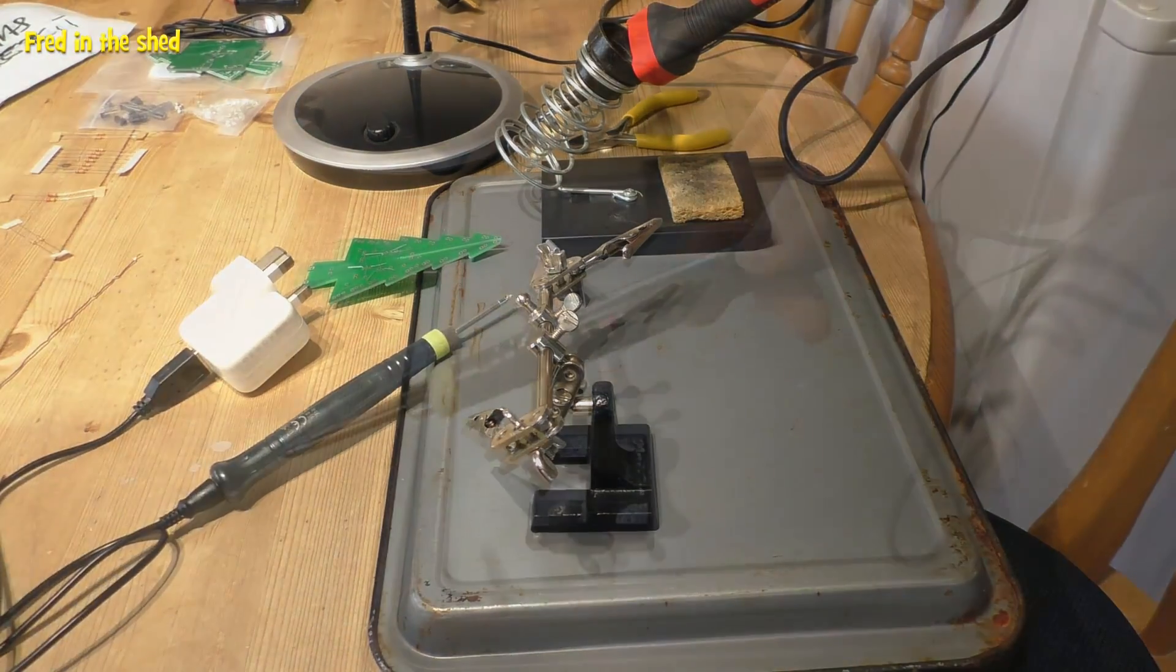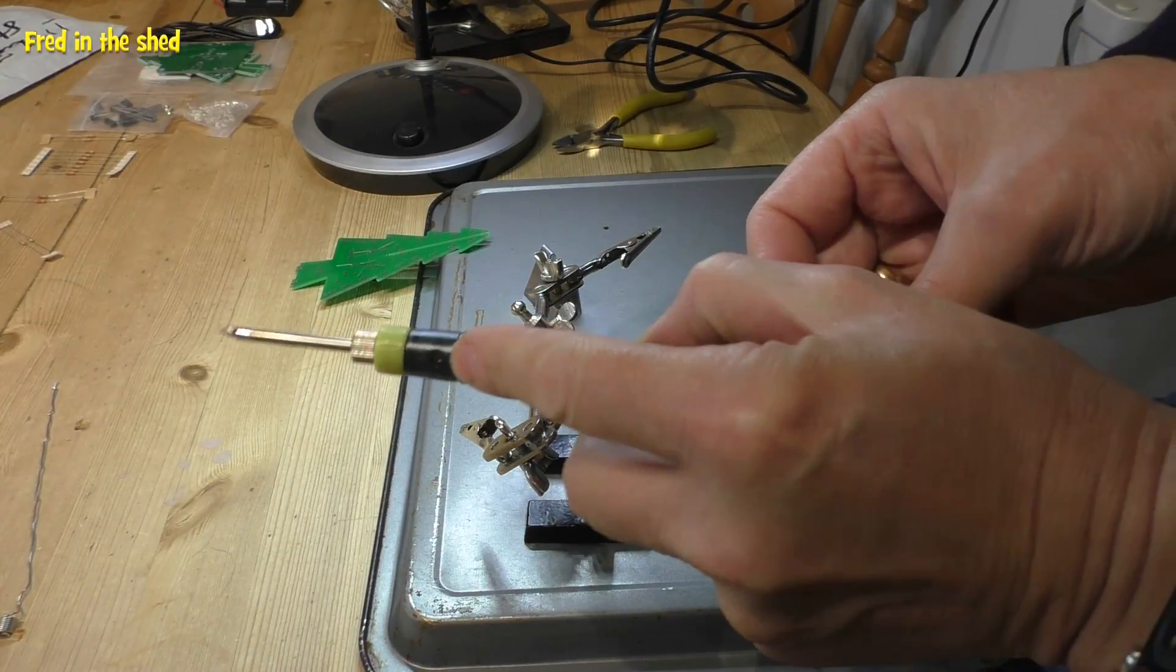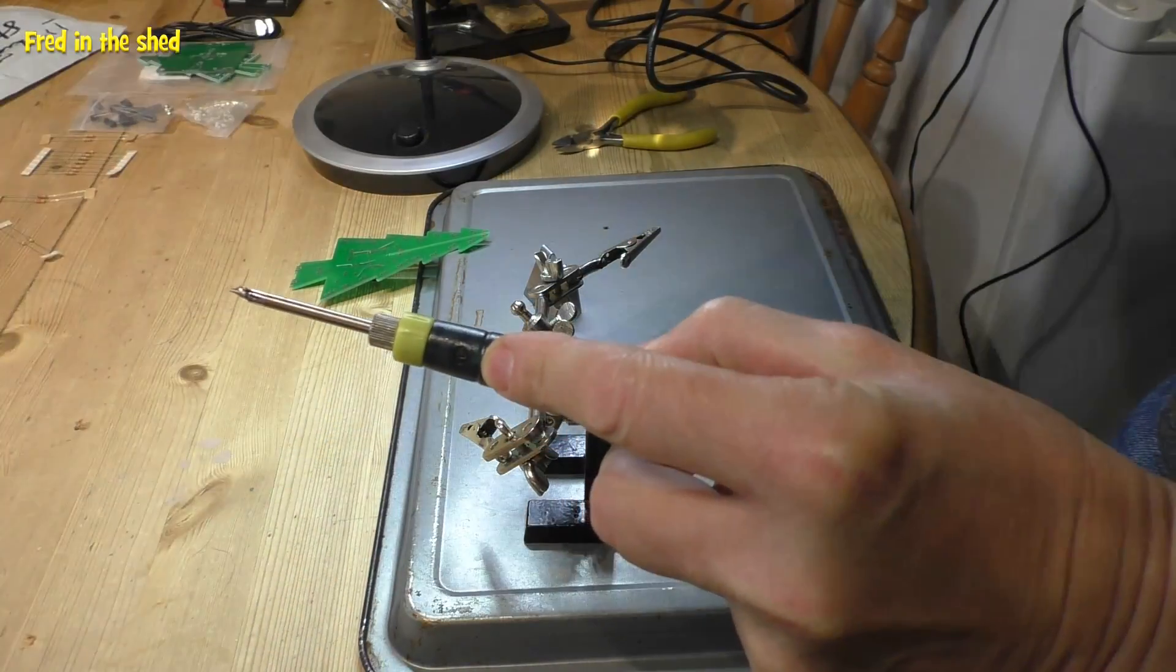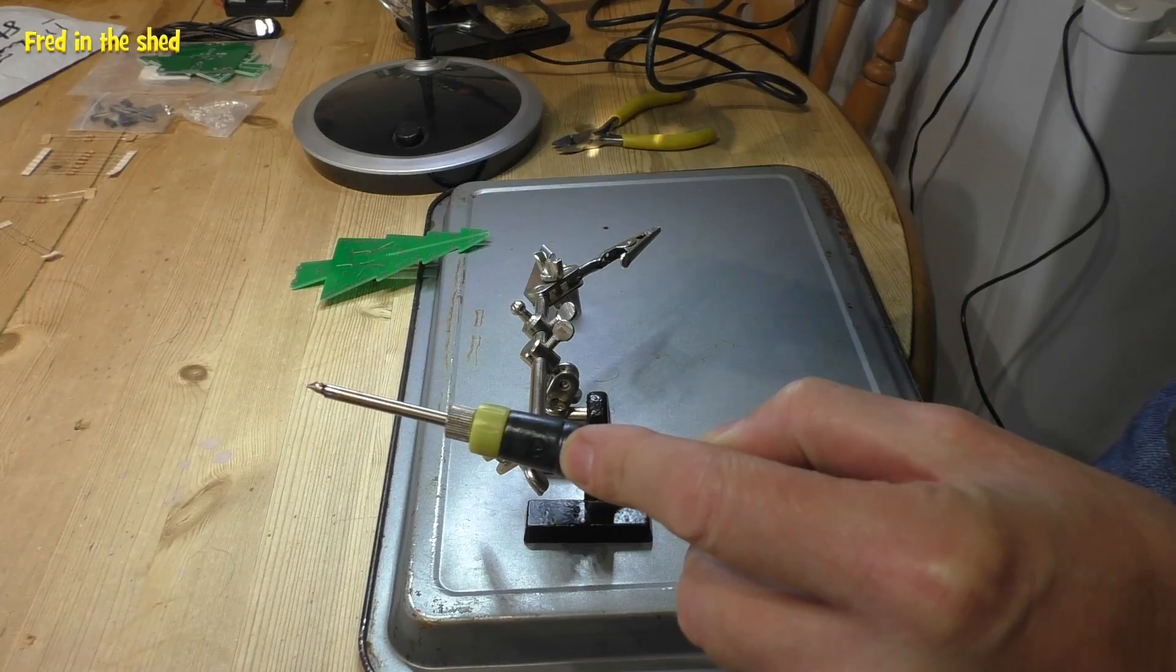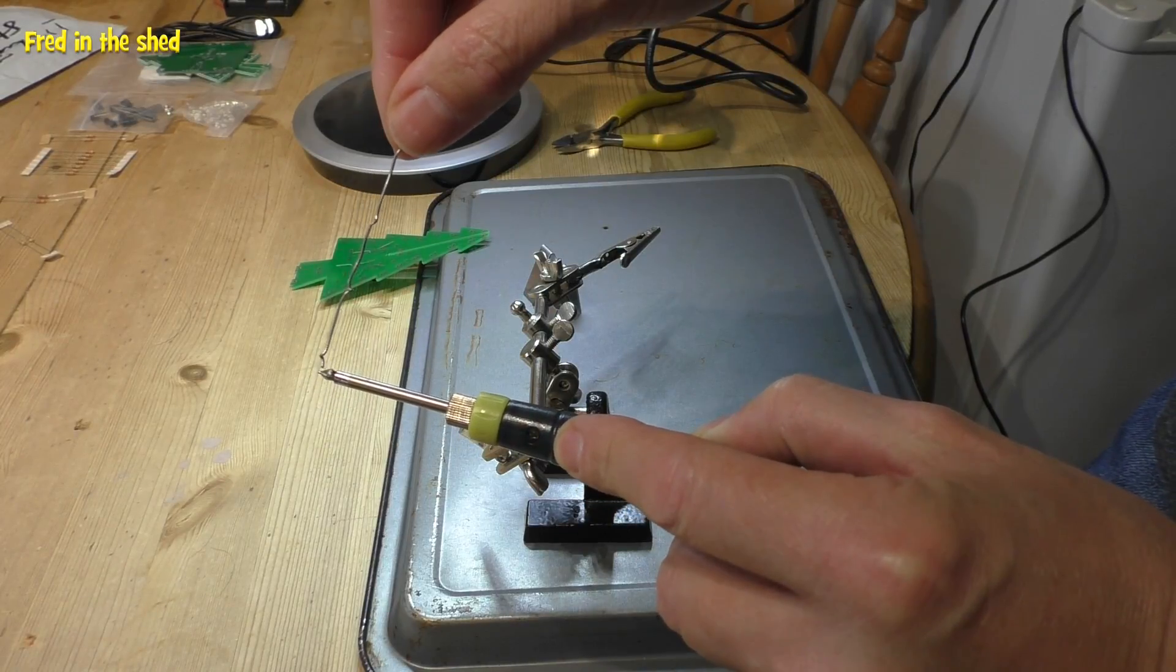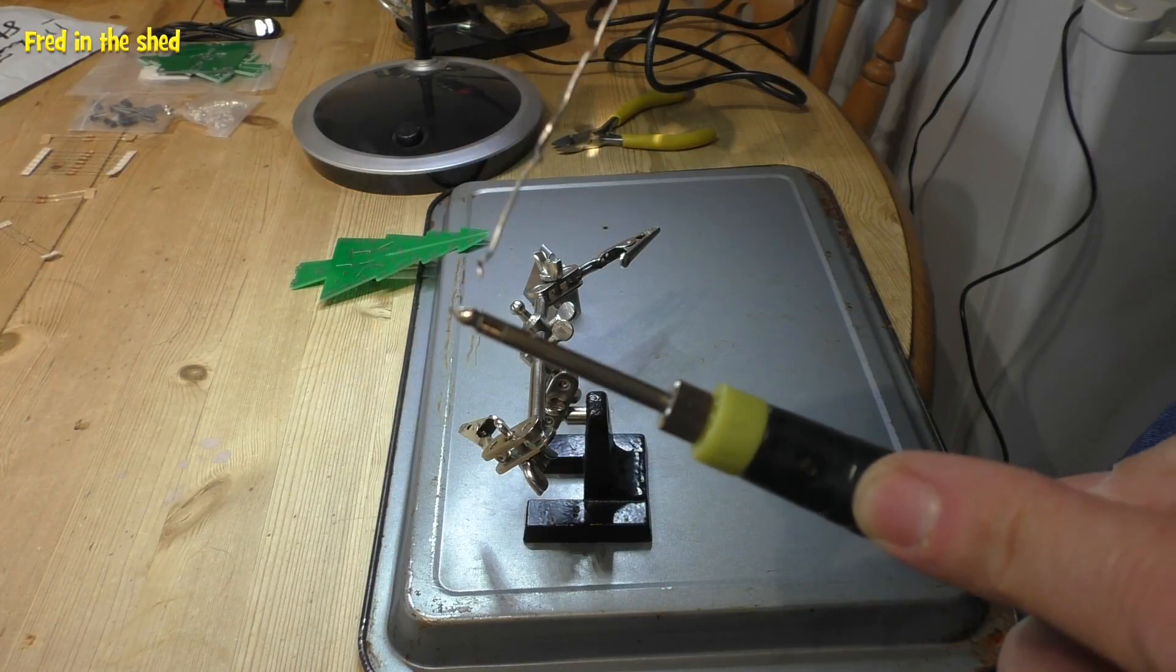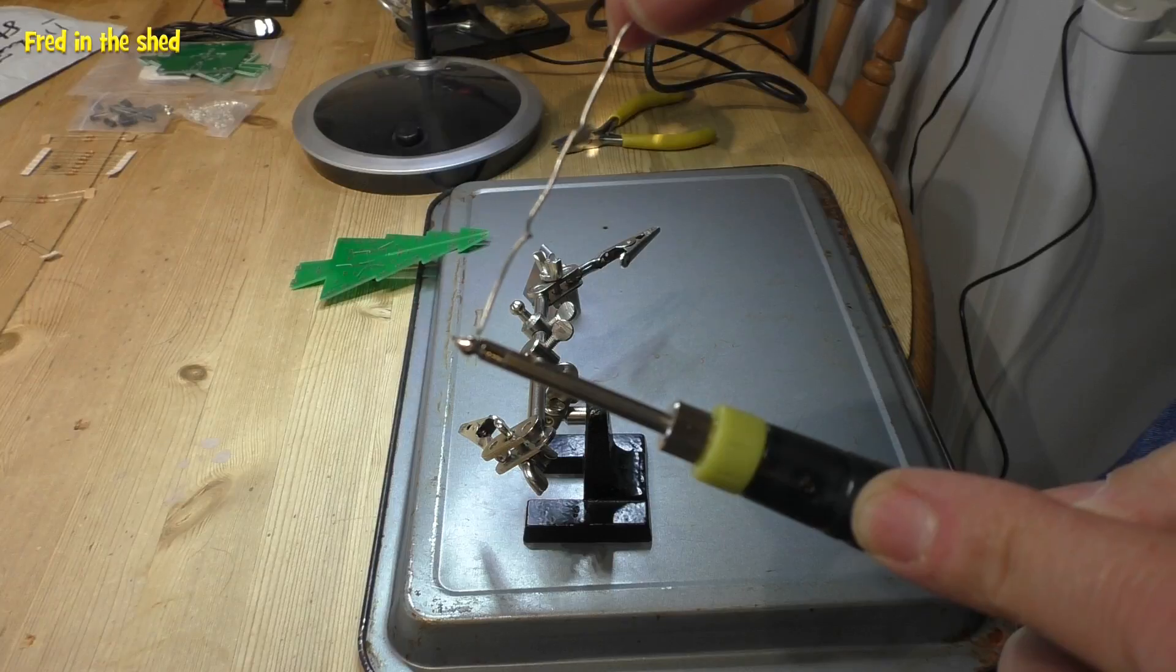Now the way the soldering iron works is a bit strange. It doesn't stay on all the time. What you have to do is there's a little chrome button, it's sort of touch sensitive, and you just have to hold your finger on that and it heats up really, really quickly. It claims to heat up to full temperature in just about 15 seconds.